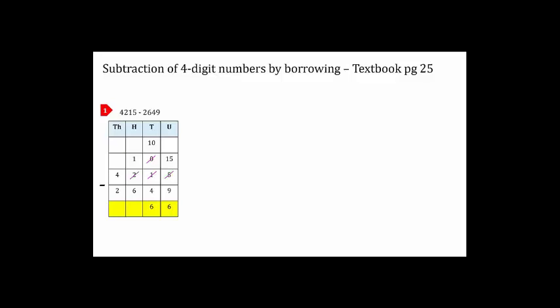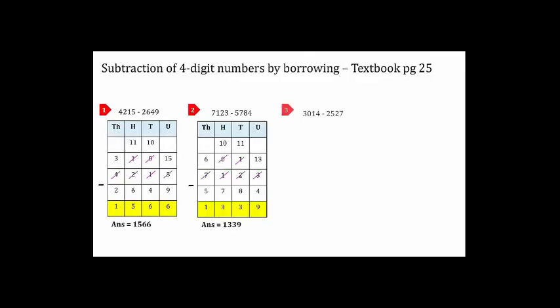So we go to thousands place and borrow. Thousands digit four becomes three, and hundreds digit one becomes eleven. Eleven minus six equals five. We write five under the hundreds place. Thousands column: three minus two equals one. Our final answer is 1566. In this way we can solve the other sums.